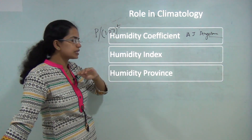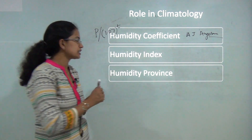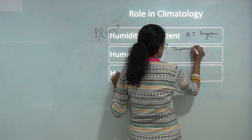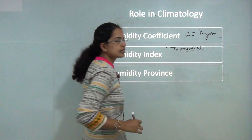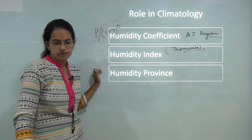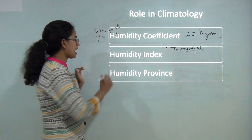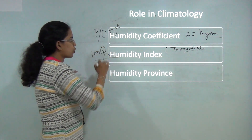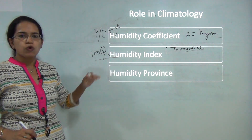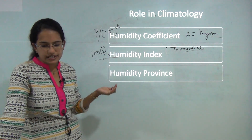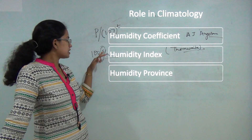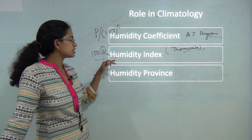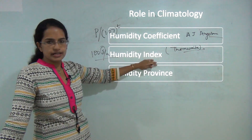The humidity index was explained by Thornthwaite, who used this index to understand the climatic classification of a region. He classified it as 100S divided by N, where S is the water surplus and N is the water that is needed. This ratio of surplus water to required water is what he named the humidity index.